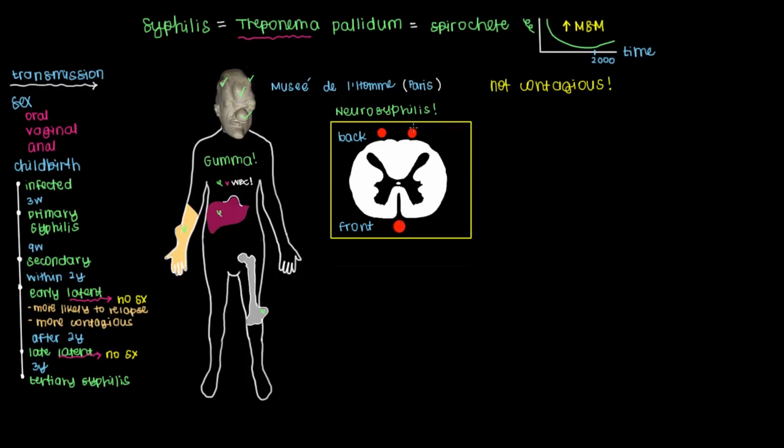So if the treponeme goes and infiltrates the endothelial cells that line the blood vessels on the posterior aspect of the spinal cord, you can develop symptoms that are grouped together and referred to as tabes dorsalis, which is just Latin for decay in the back or on the dorsal aspect of the spinal cord.